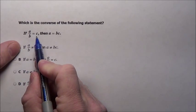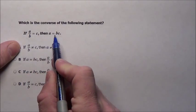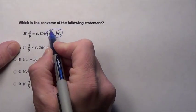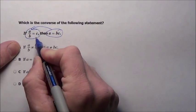It says if A divided by B is equal to C, then A equals BC. So all we're going to do is take this statement, put it over here, take this statement, put it over here.